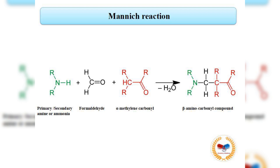The Mannich reaction is an example of nucleophilic addition of an amine to a carbonyl group, followed by dehydration to the Schiff base. The Mannich reaction is also considered a condensation reaction.